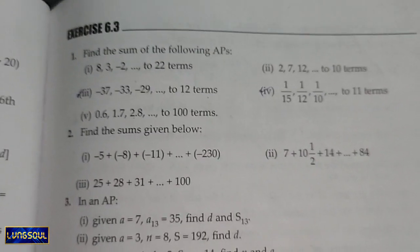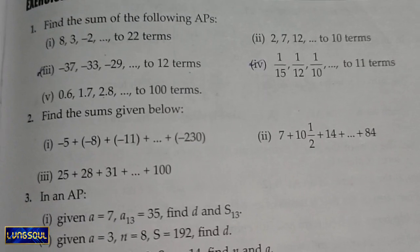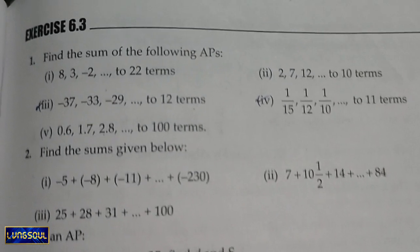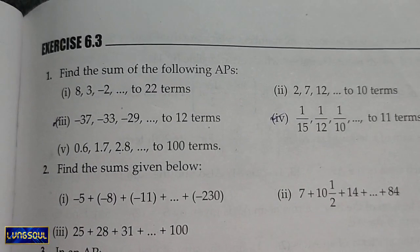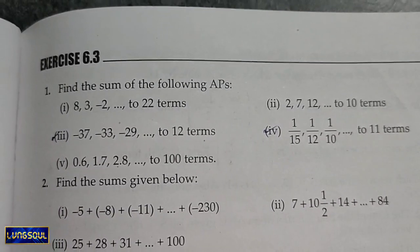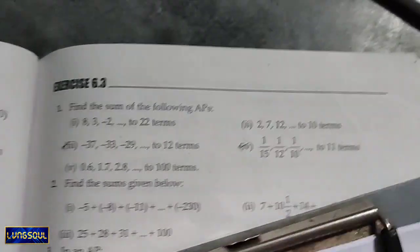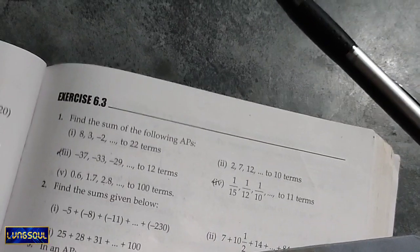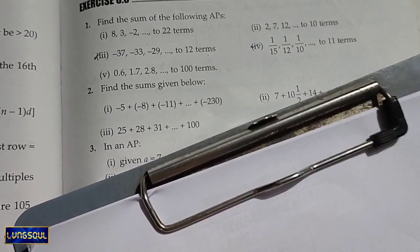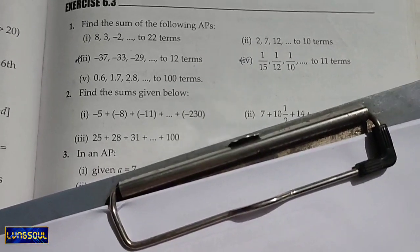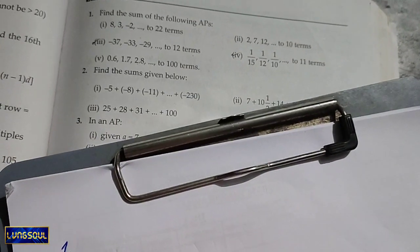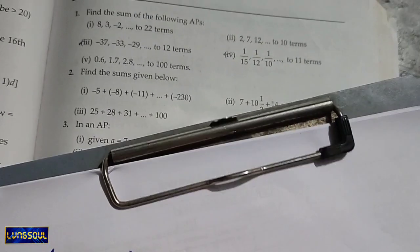Arithmetic progression, exercise 6.3, question number one. Find the sum of the following arithmetic progression: 8, 3, -2, and so on.